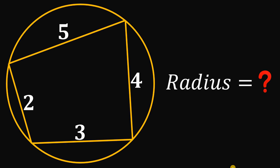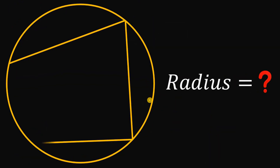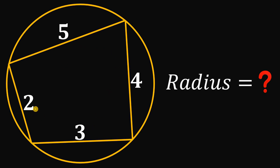Can you solve this semi-impossible geometry challenge? Here's the question. Let's start with a circle and then draw some chords with their corresponding lengths 5, 4, 3, and 2 units. The question is: what is the radius of this circle? You can pause this video if you want to give this problem a try.